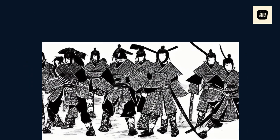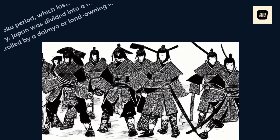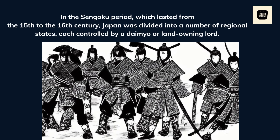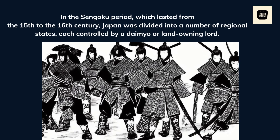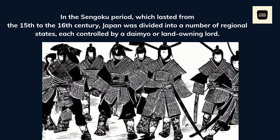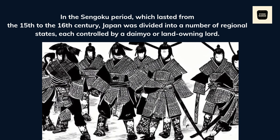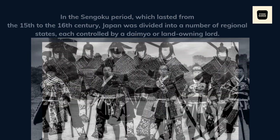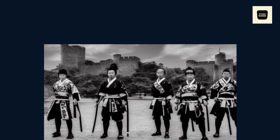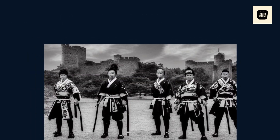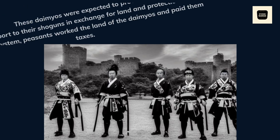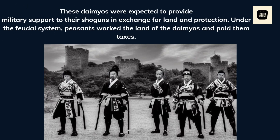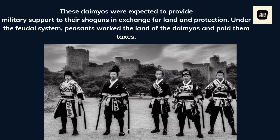In the Sengoku period, which lasted from the 15th to the 16th century, Japan was divided into a number of regional states, each controlled by a daimyo, or landowning lord. These daimyos were expected to provide military support to their shoguns in exchange for land and protection.